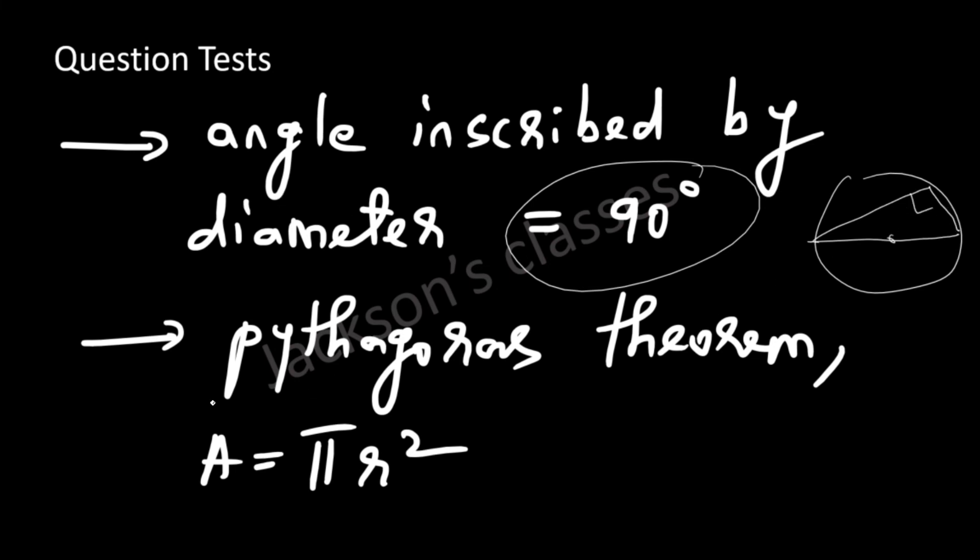This is something that you should know, and then the Pythagoras theorem is something that you should know. If you know the Pythagorean triplet 5-12-13, you can do the calculation even faster. And then finally you have to find the area of the circle.